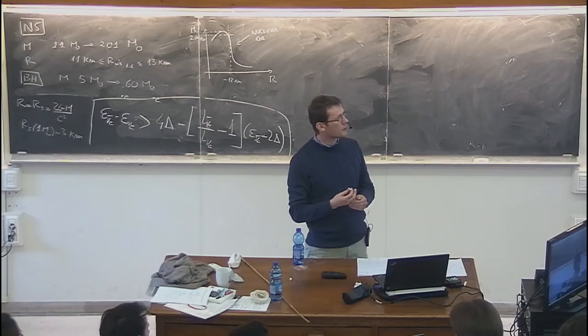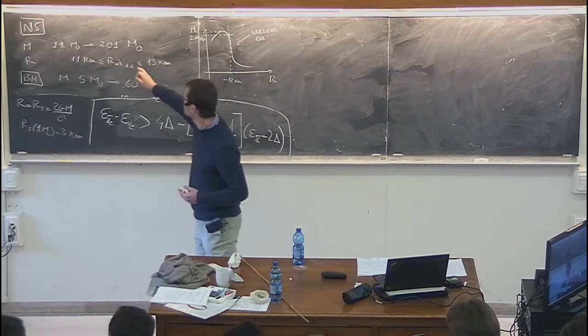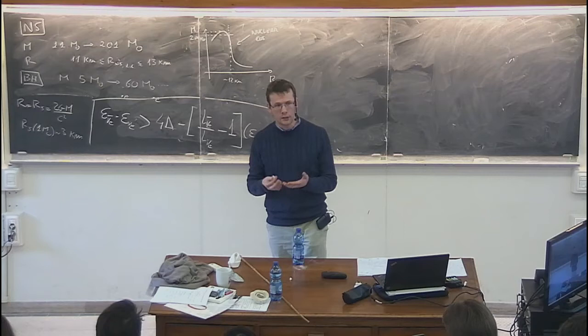Counterparts from R-process nucleosynthesis in compact binary mergers. Just before starting, just to be on the same page: compact objects in the universe are white dwarfs, neutron stars, and black holes. In this part of the lecture, we will deal mainly with neutron stars, and I will from time to time mention black holes.